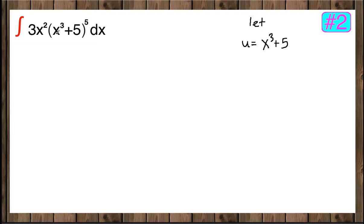By observation, we see that the derivative of x cubed is 3x squared, which is going to cancel this 3x squared here.